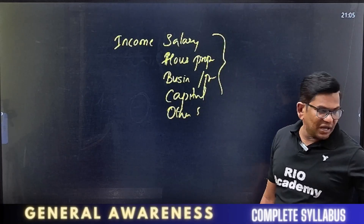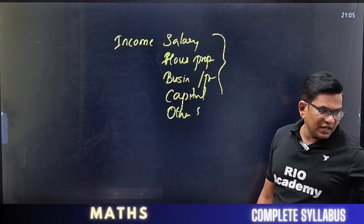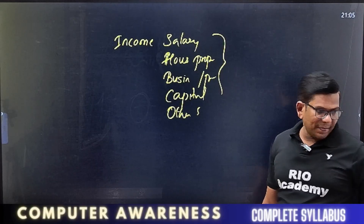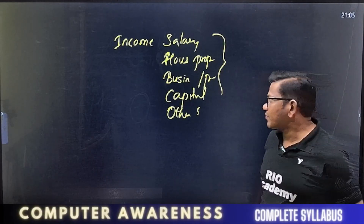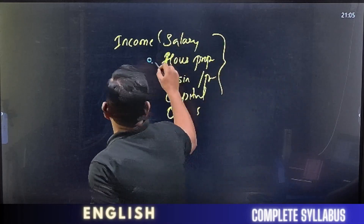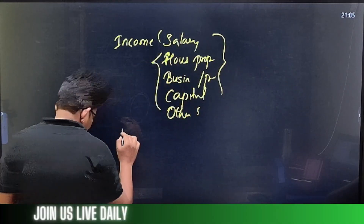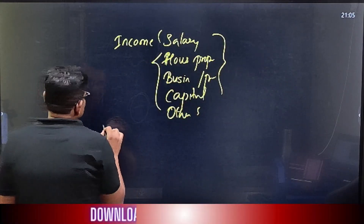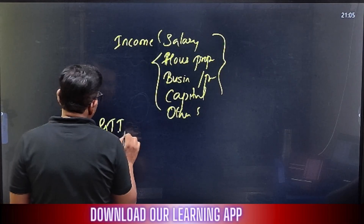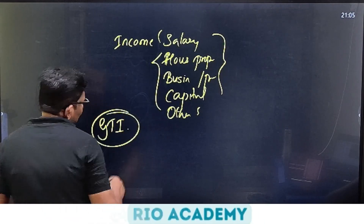You just have to give me the exam. You do the exam — that's why you make deductions. These 5 heads of income together form the GTI — gross total income.